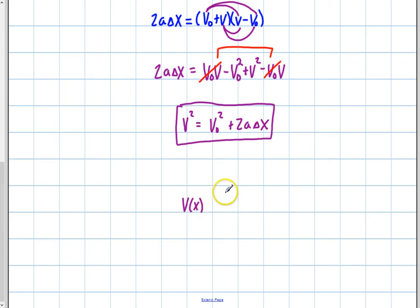I could say that v as a function of position or displacement in this case. I can say position. It doesn't matter because it's going to be final minus initial. It's going to equal plus or minus the square root of v initial squared plus 2a delta x. And I just want to emphasize two things here just before I finish this video out.